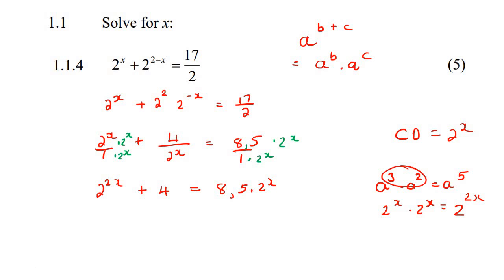Now we can take everything to the left hand side, 2 to the 2x minus 8.5 times 2 to the x plus 4 equals 0, and now this is actually some type of trinomial.